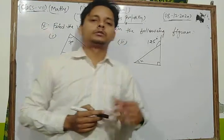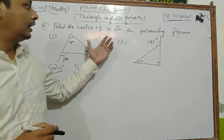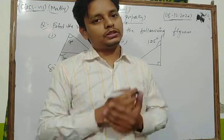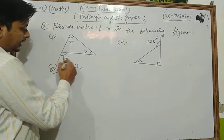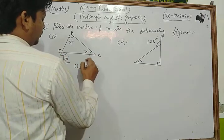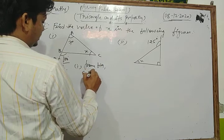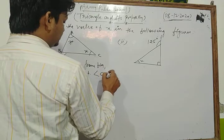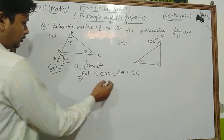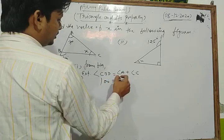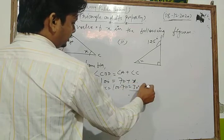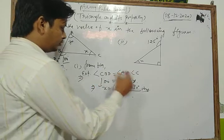You know that the exterior angle is always equal to the sum of its two opposite interior angles. In the first question, the exterior angle CBD equals 100 degrees, and the two opposite interior angles are angle A as 70 degrees and angle C as x. So x equals 100 minus 70, which is 30 degrees.